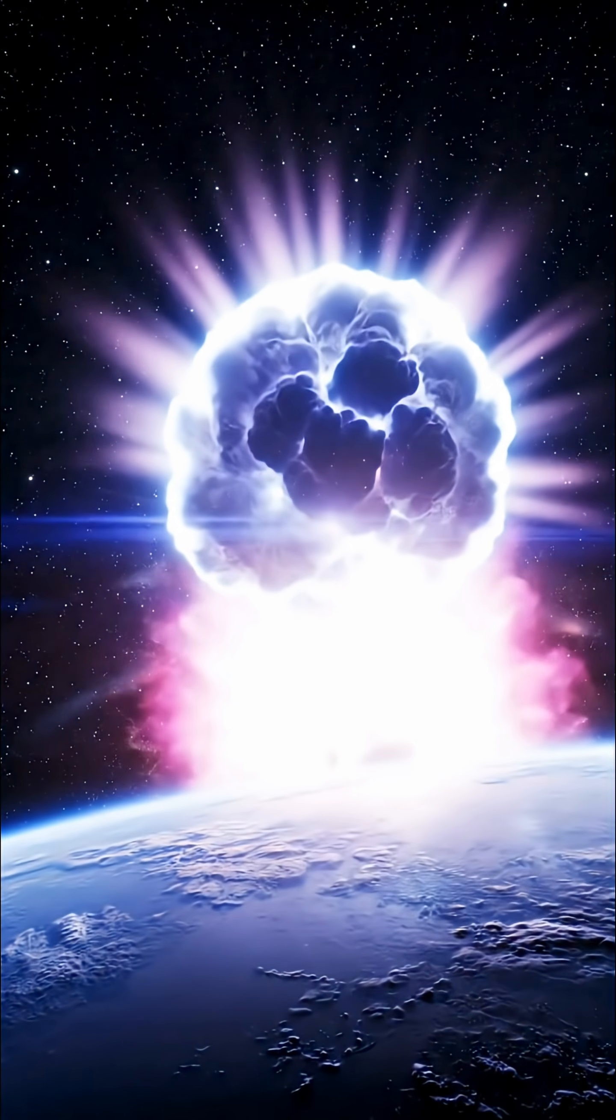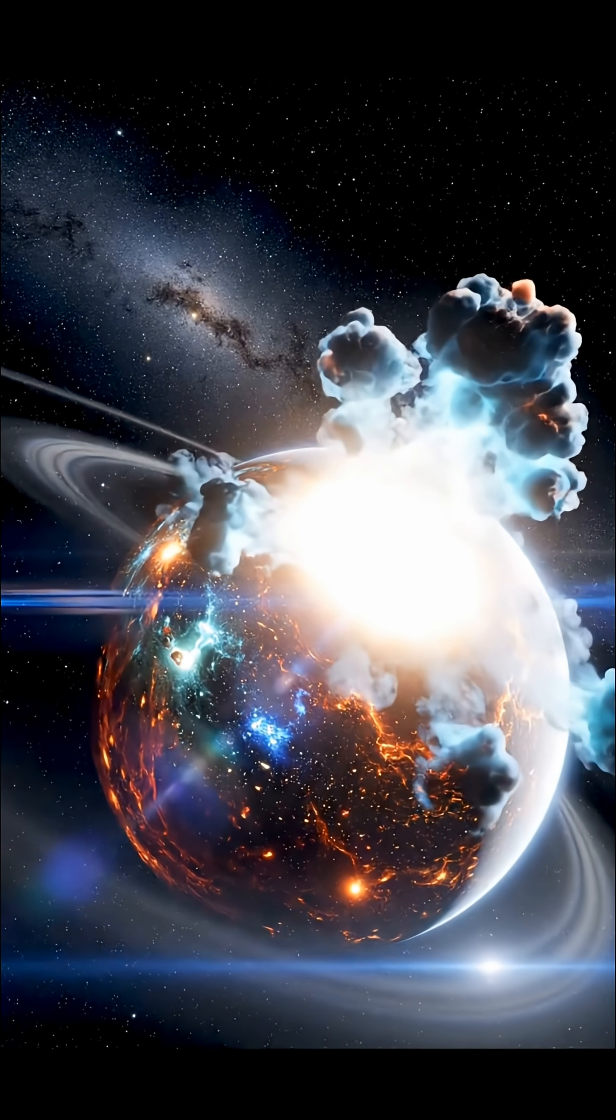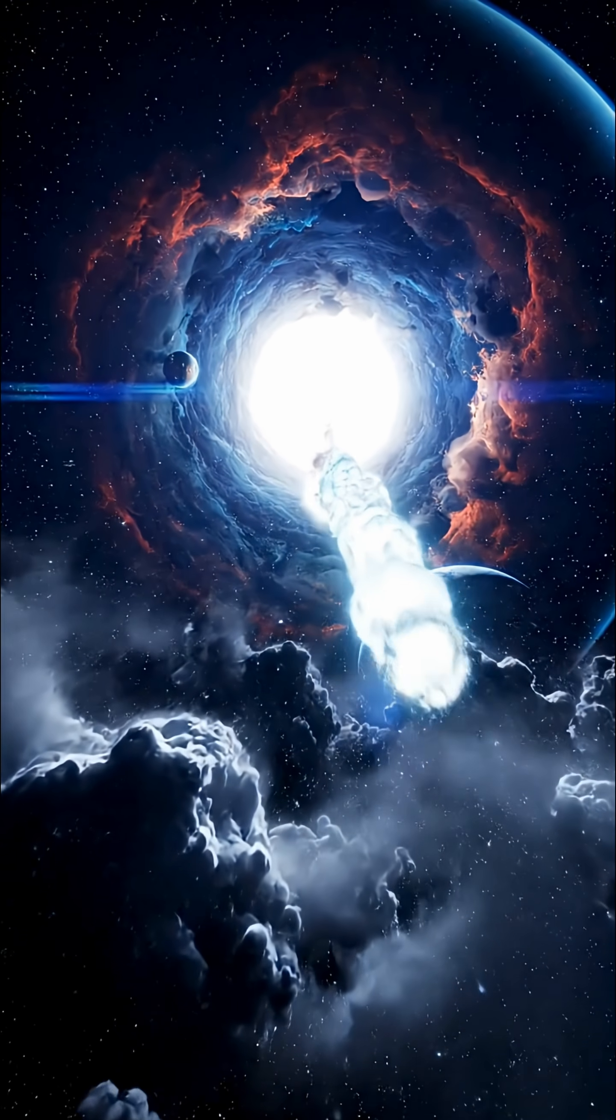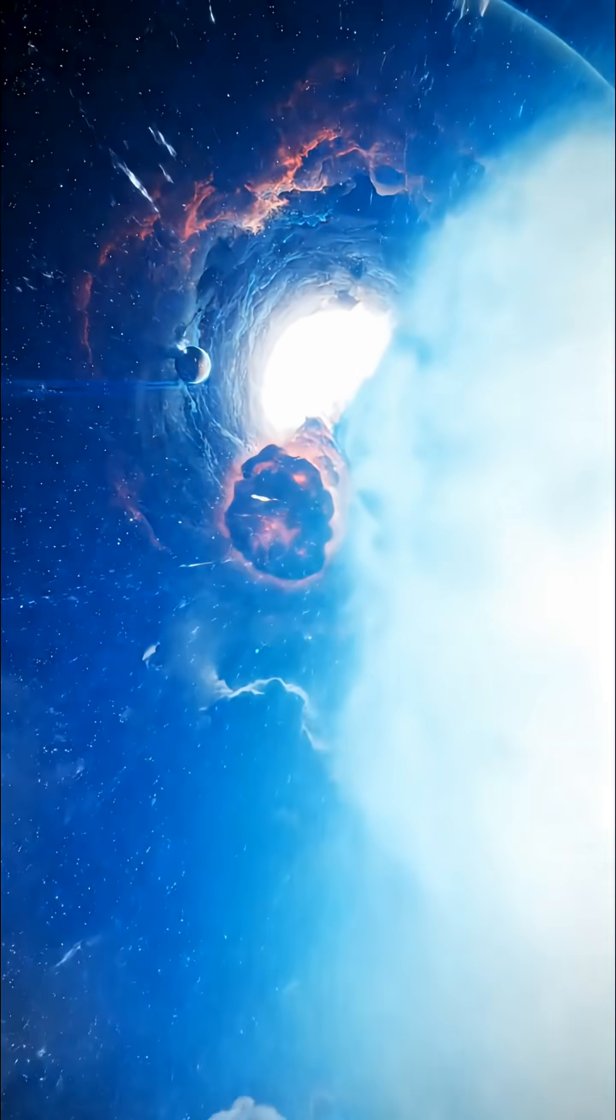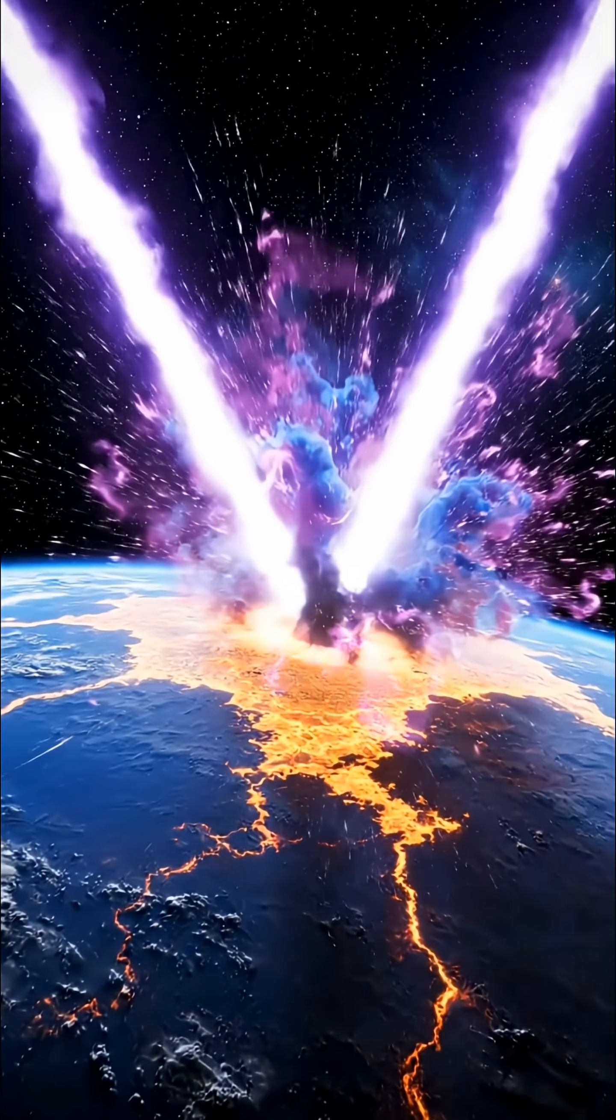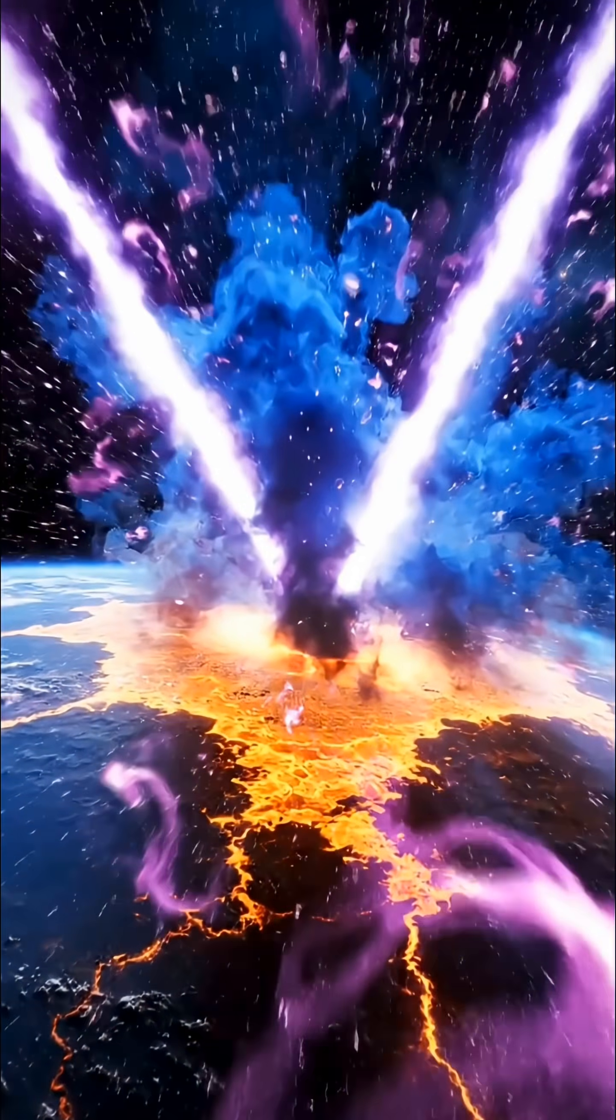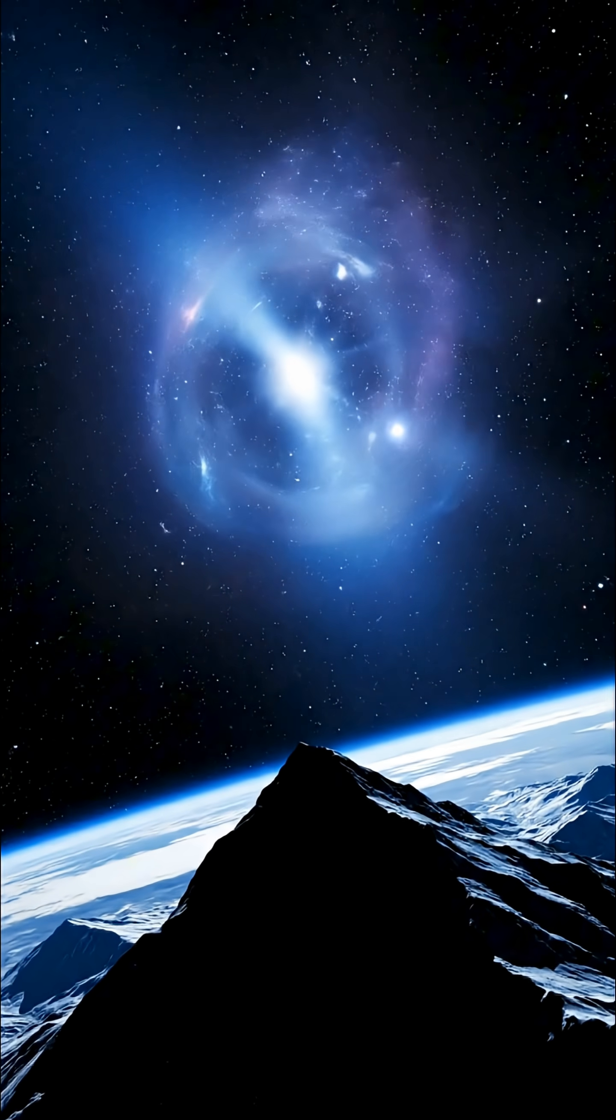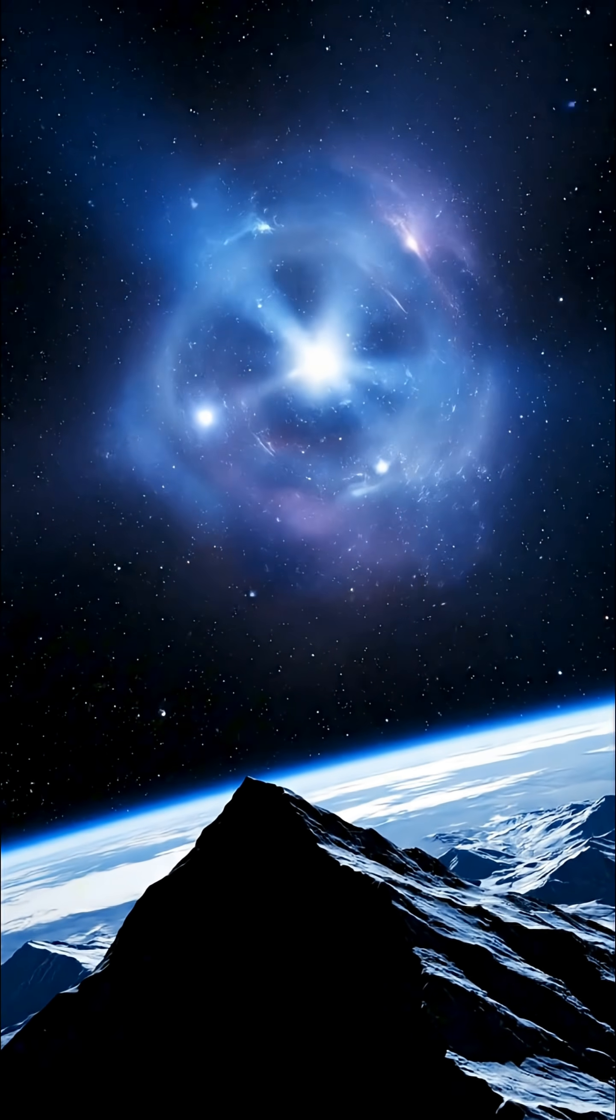Number 5: A nearby supernova. When a massive star runs out of fuel, it collapses under its own gravity and detonates in a supernova explosion. If such an event occurred within about 50 light years of Earth, the results would be catastrophic. Intense radiation would strike our planet almost instantly, stripping away the ozone layer and exposing the surface to lethal cosmic rays. Within seconds, most complex life would be wiped out. Fortunately, no known star is currently close enough, but the universe never stays still.